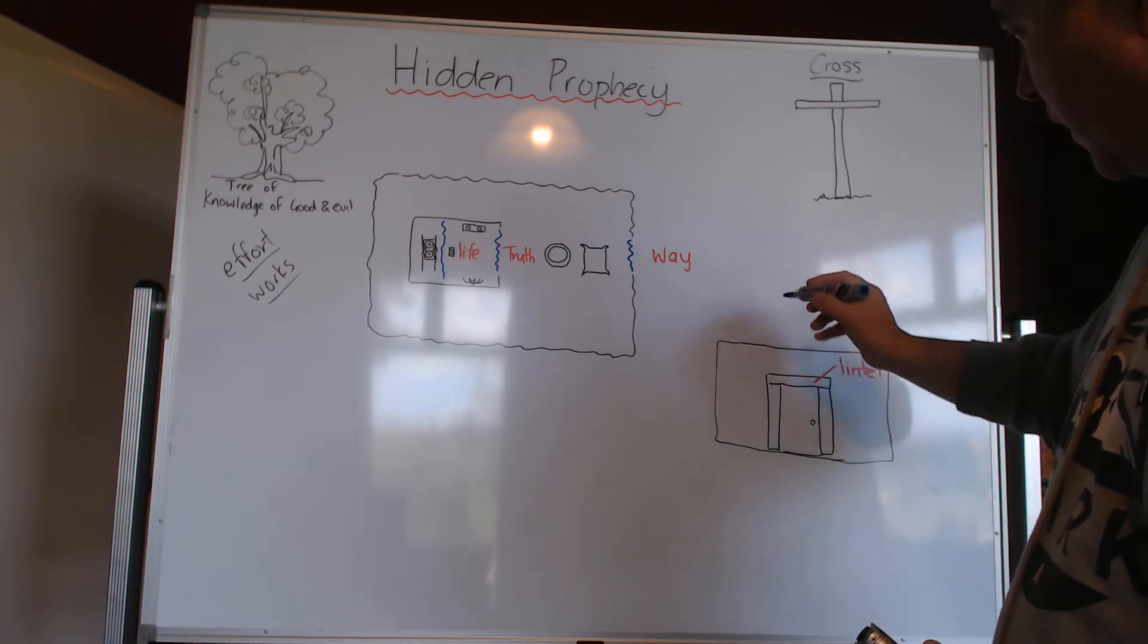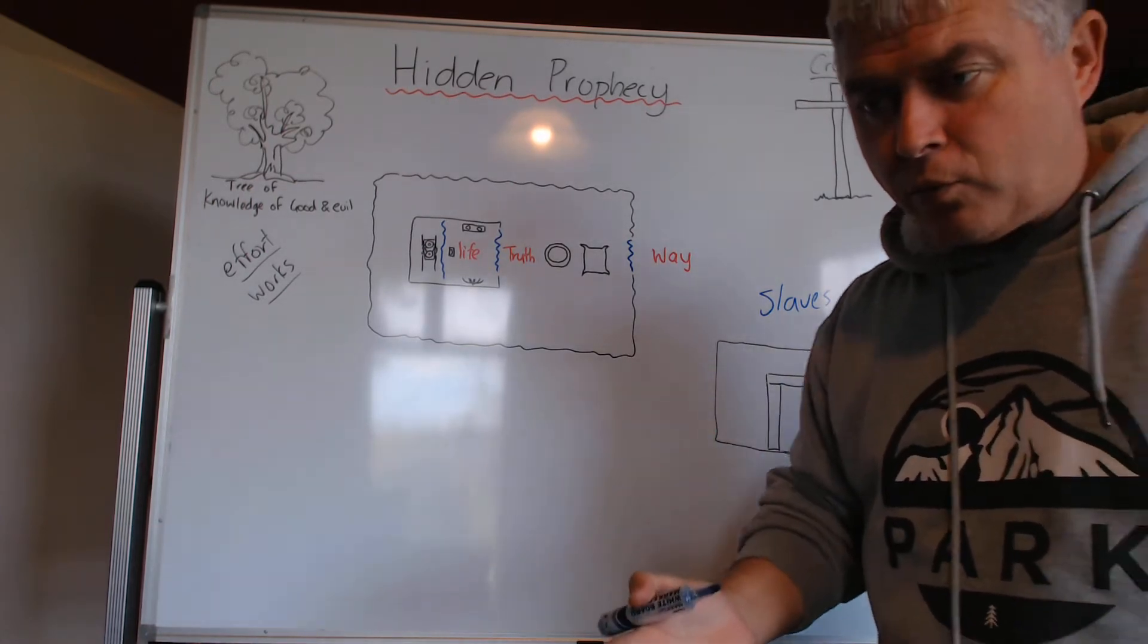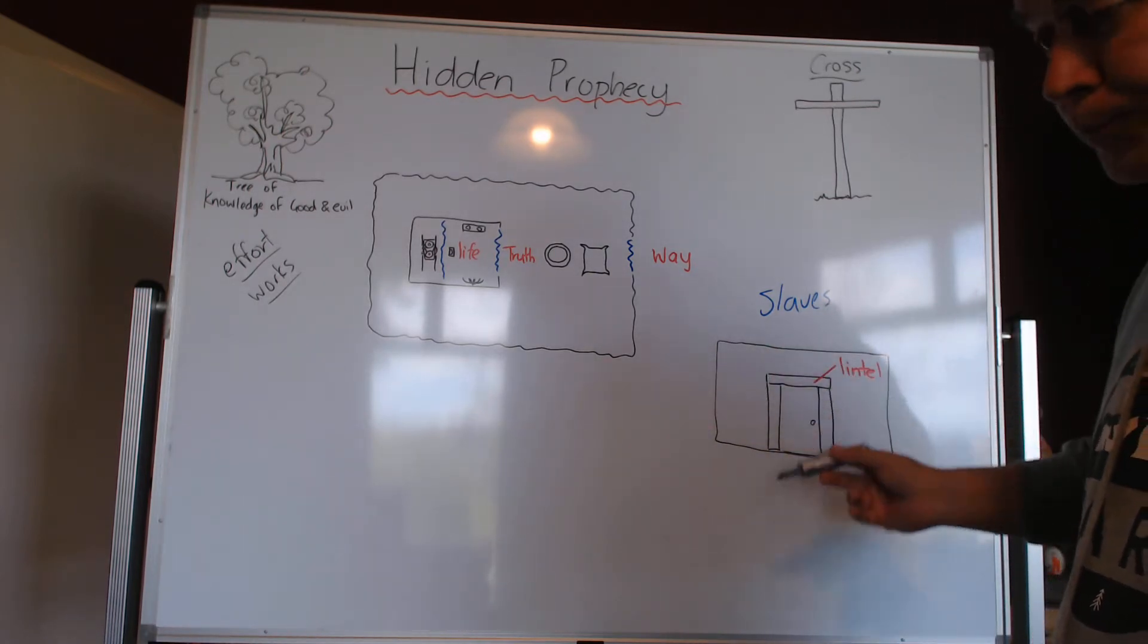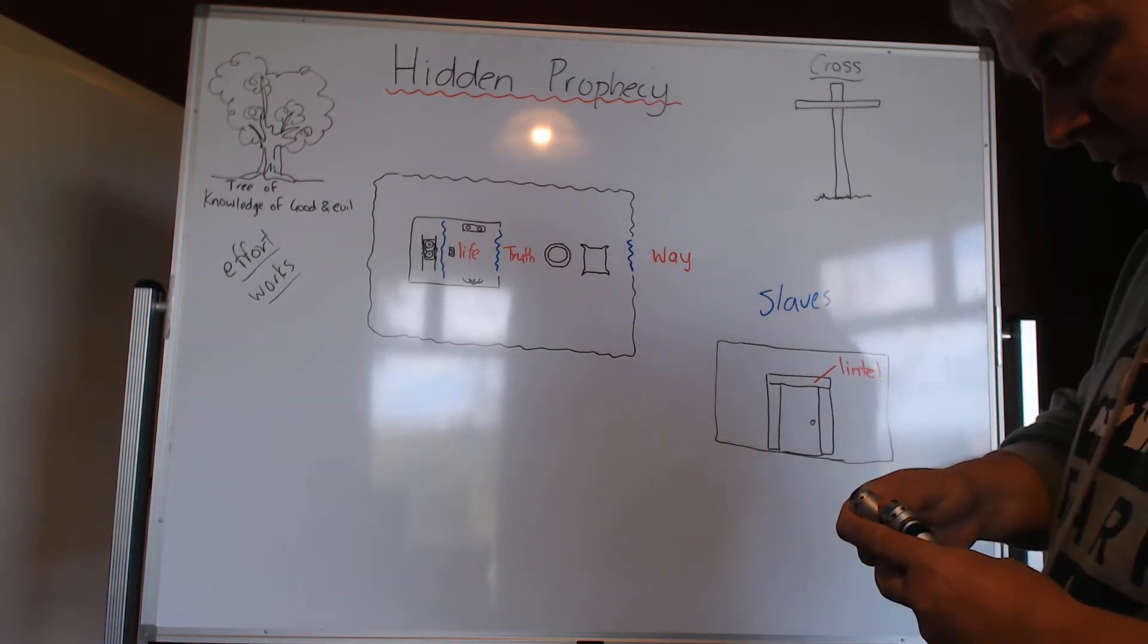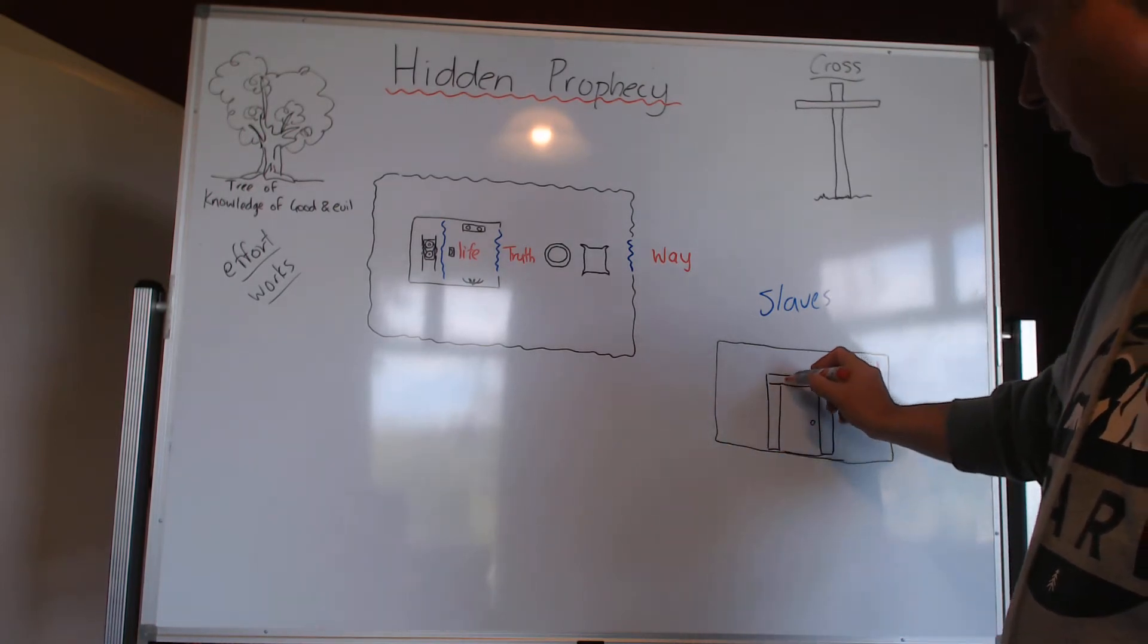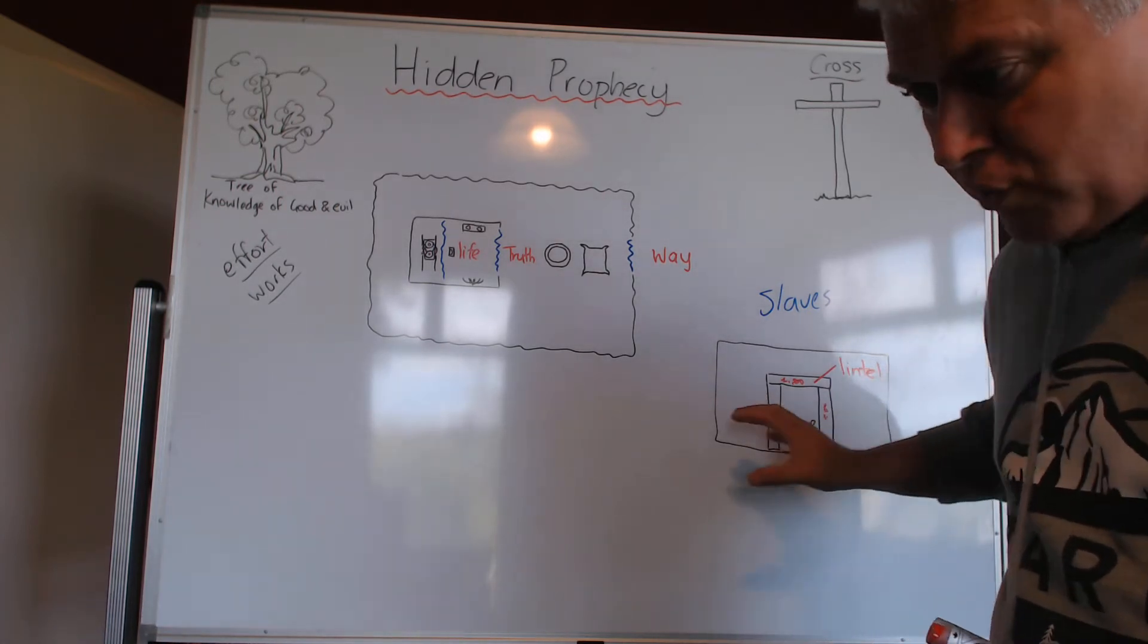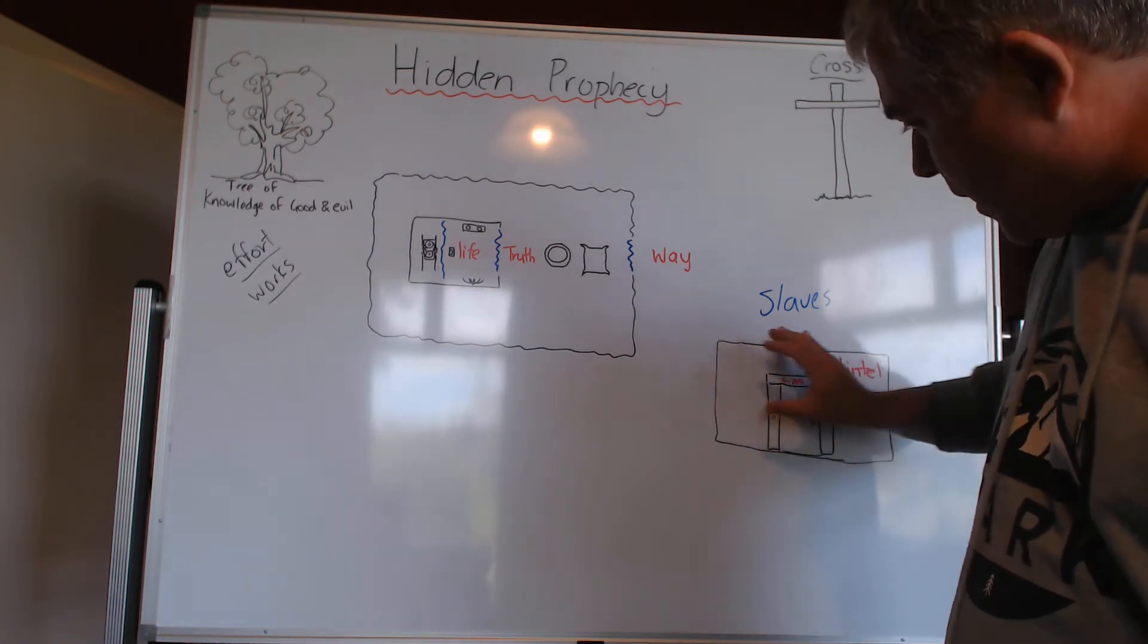When Moses was - they were slaves in Egypt for 400 years. On the day they were rescued and God brought them out and delivered them from their captivity, which is like captivity to sin, they had to go in their house and eat a lamb without spot or blemish. And eat it that night and cover the doorposts of their house using a hyssop branch.